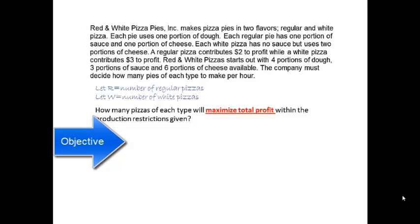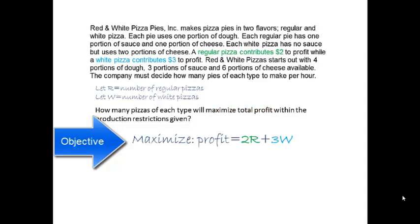To formulate mathematically, we write an equation for profit with the instruction to maximize. Since profit per regular pizza is $2, the profit from R regular pizzas is 2R. Similarly, the profit from W white pizzas is 3W, and the total profit is the combination: 2R + 3W. To solve for the best number of regular and white pizzas, we want to find values of R and W that maximize profit.